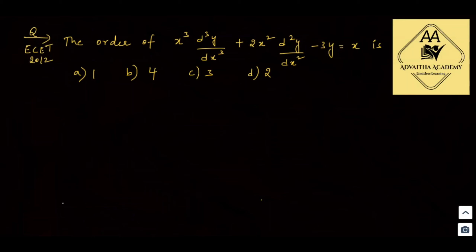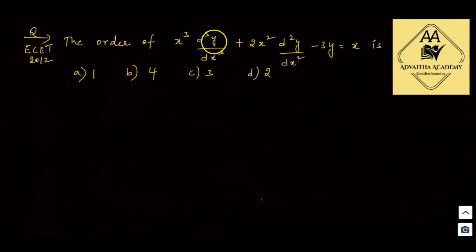Find the order of: x³ · (d³y/dx³) + 2x² · (d²y/dx²) - 3y = x.